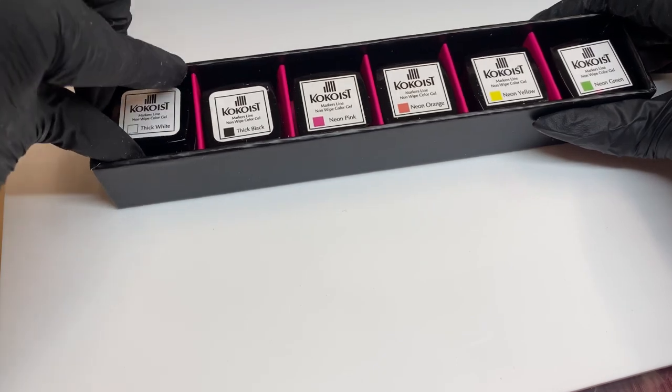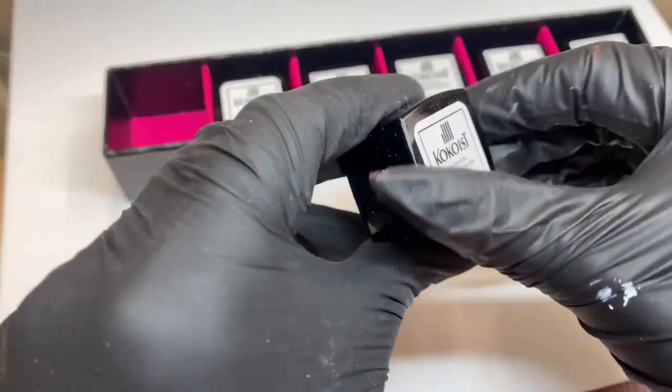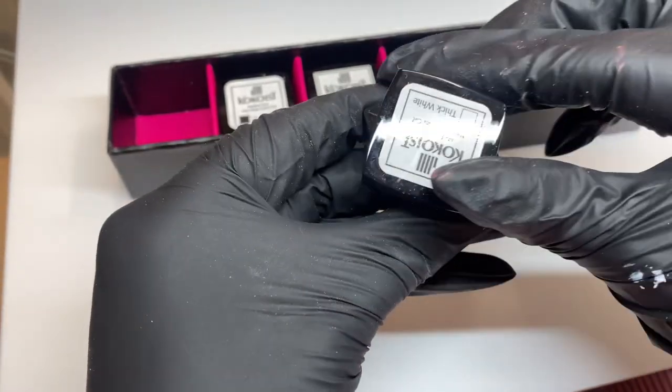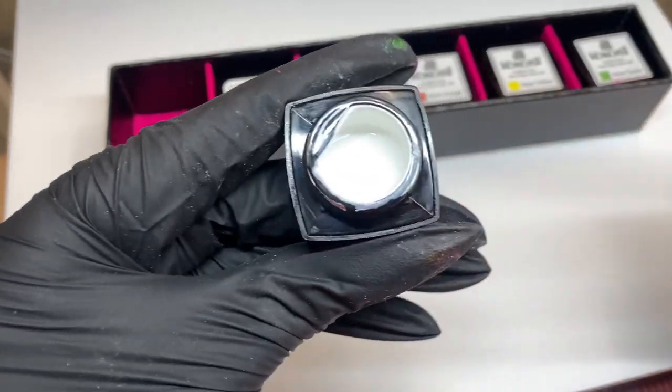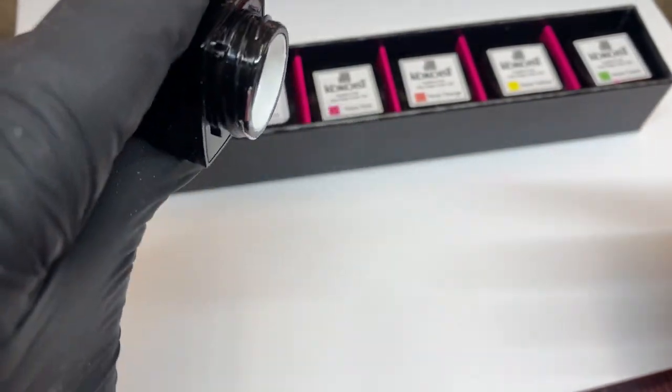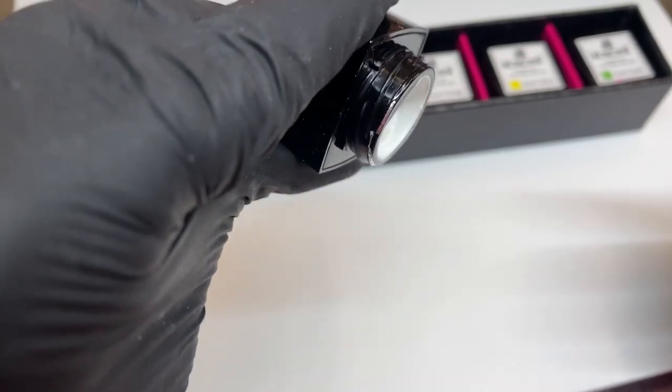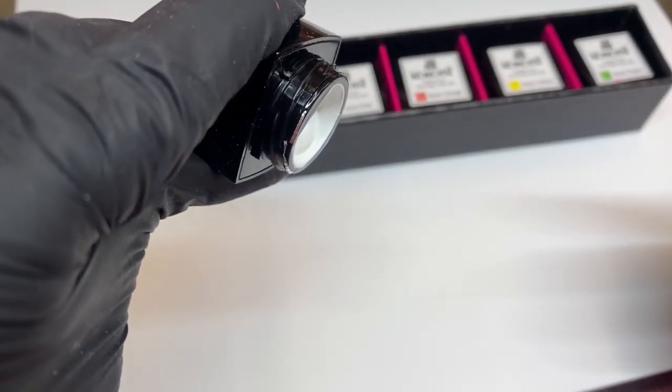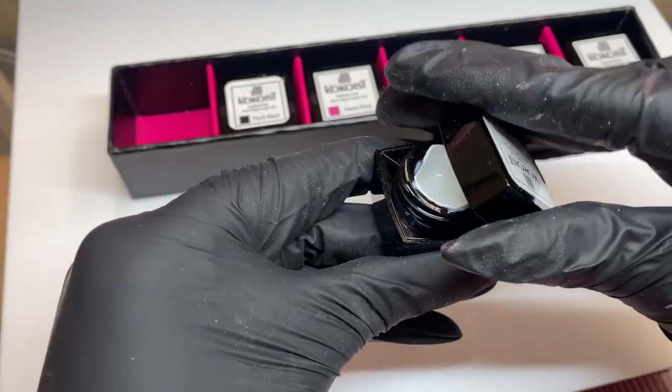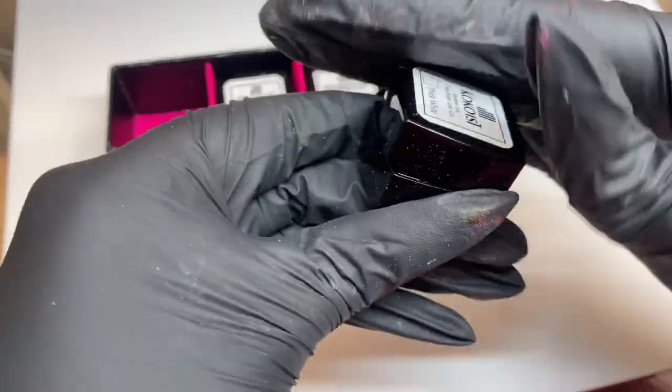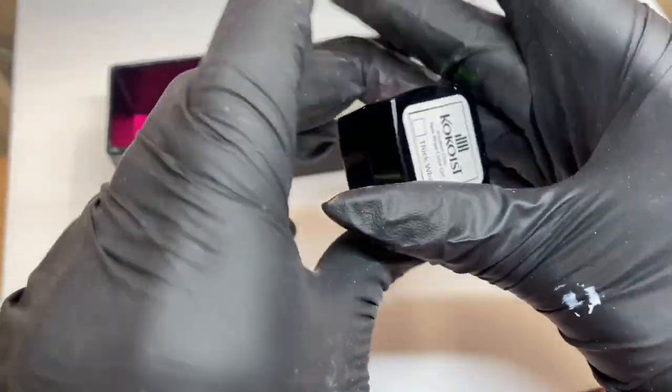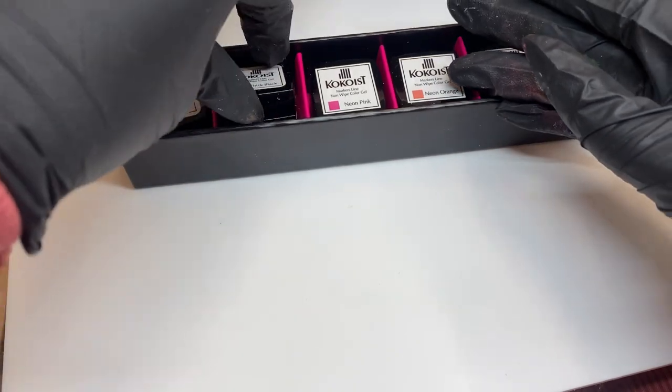So the first color that is in this collection is a white, which obviously is essential, and it's a thicker consistency. You can see it's taking a long time for it to kind of move through the pot, whereas the other gels kind of just pour, not super runny but you get the gist.